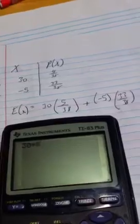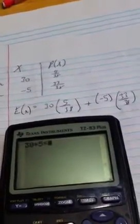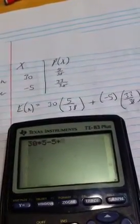So if you do that on your calculator, you should get 30 times 5 minus 5 times 33. That's negative 15 all over 38.